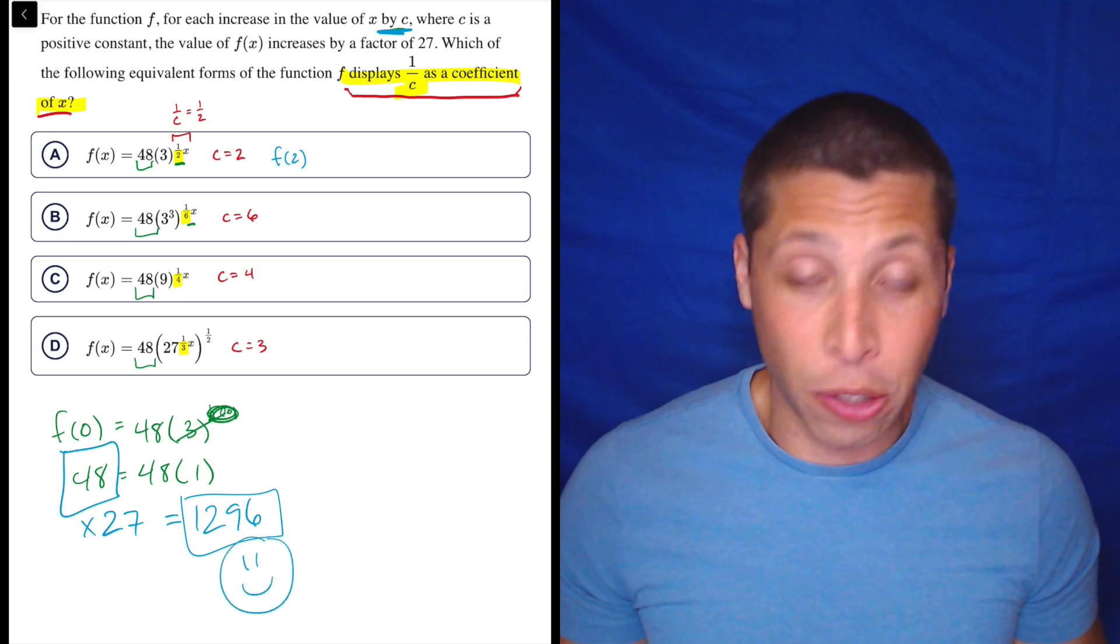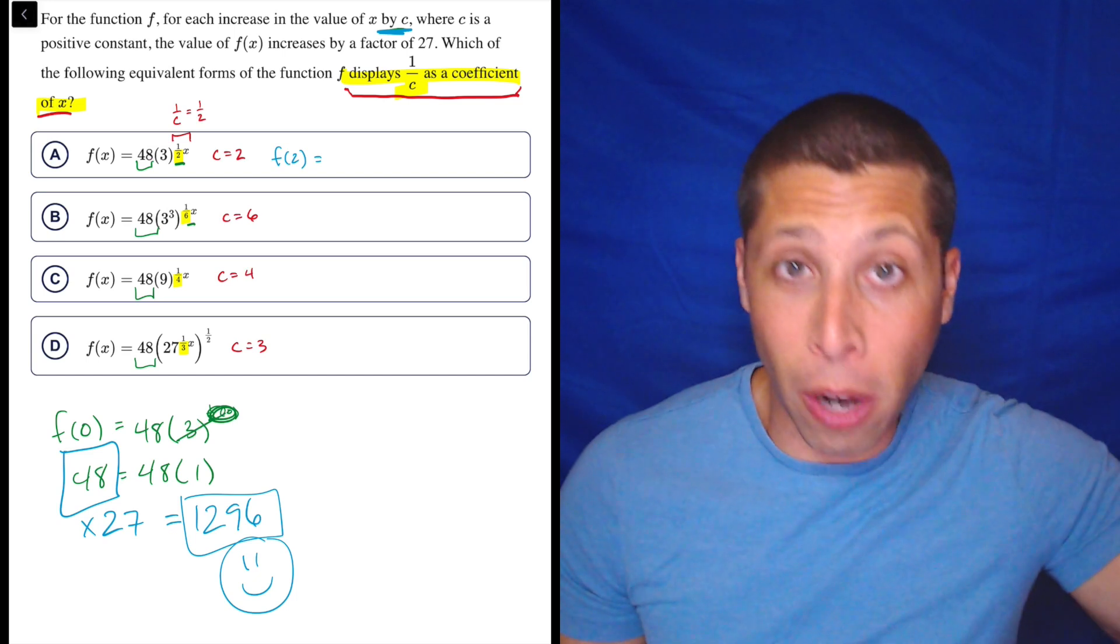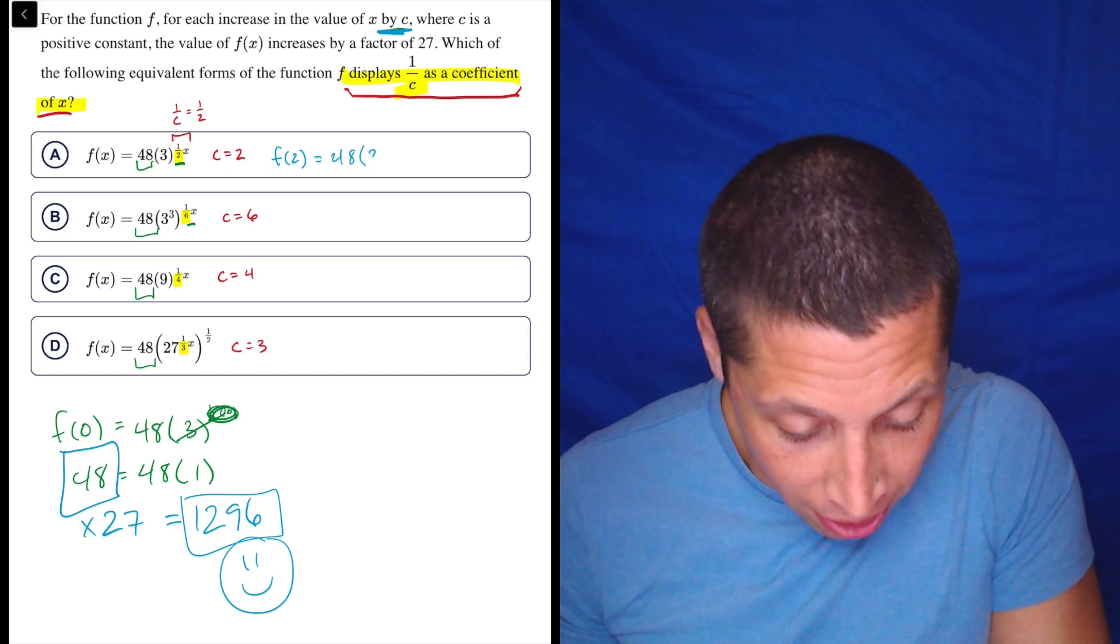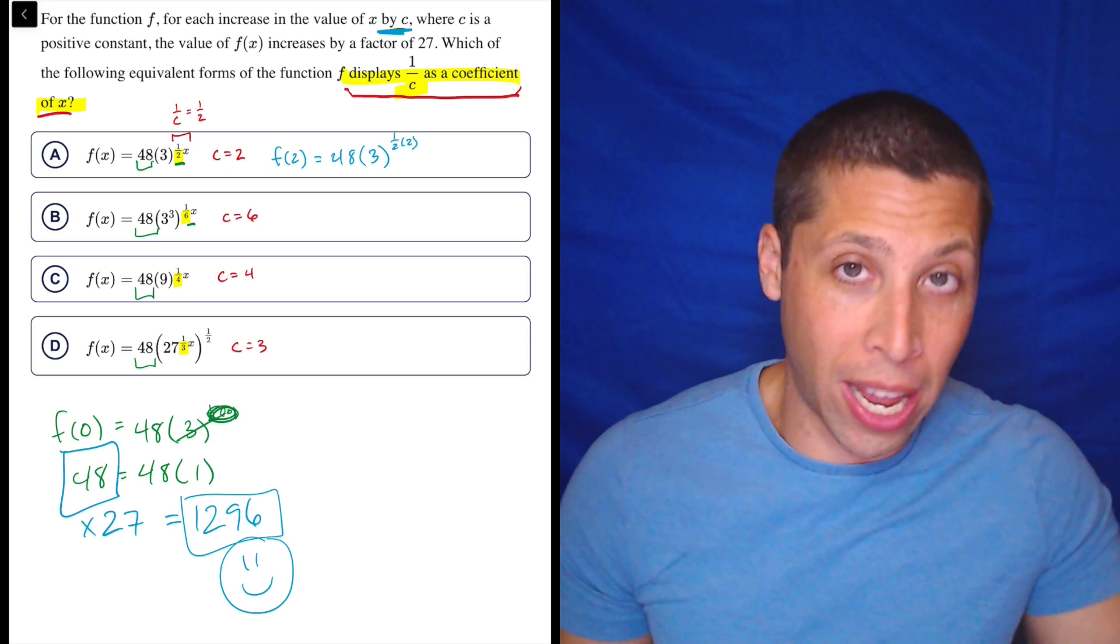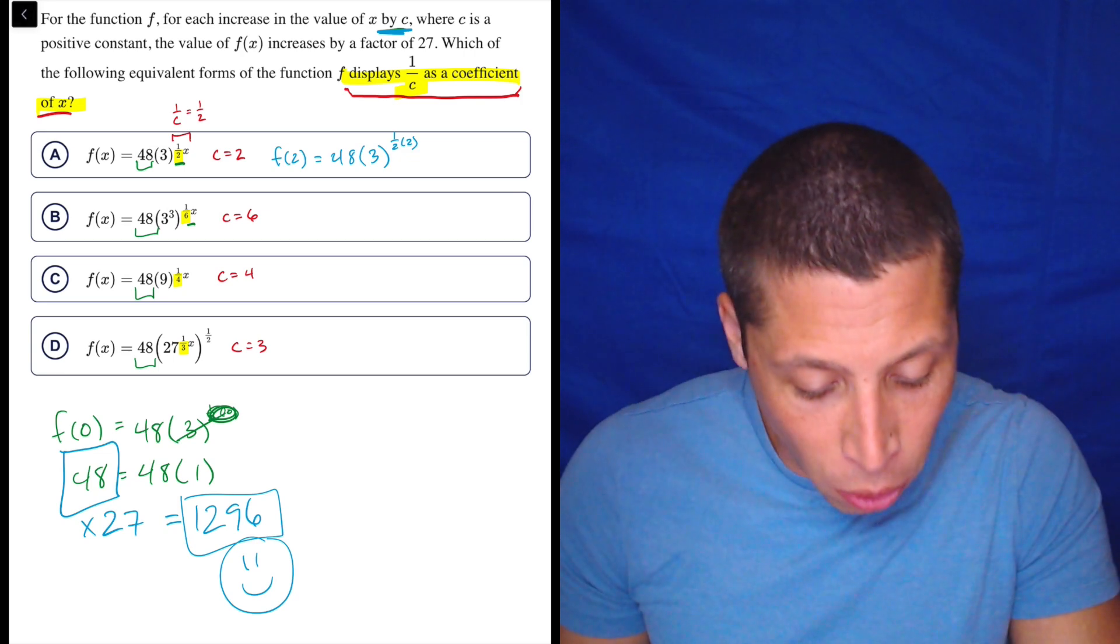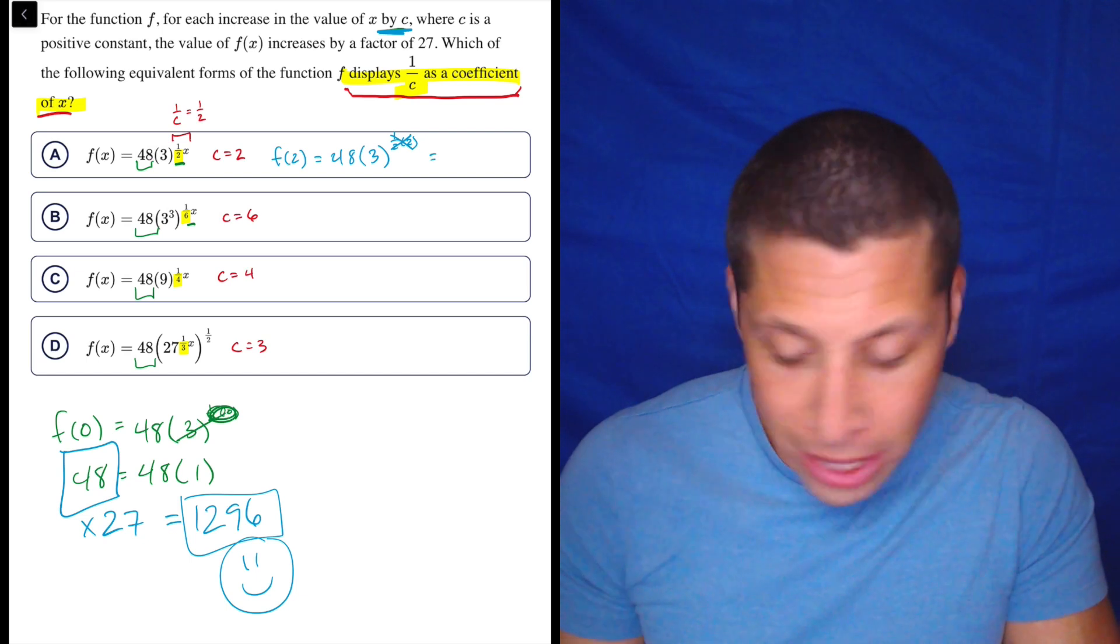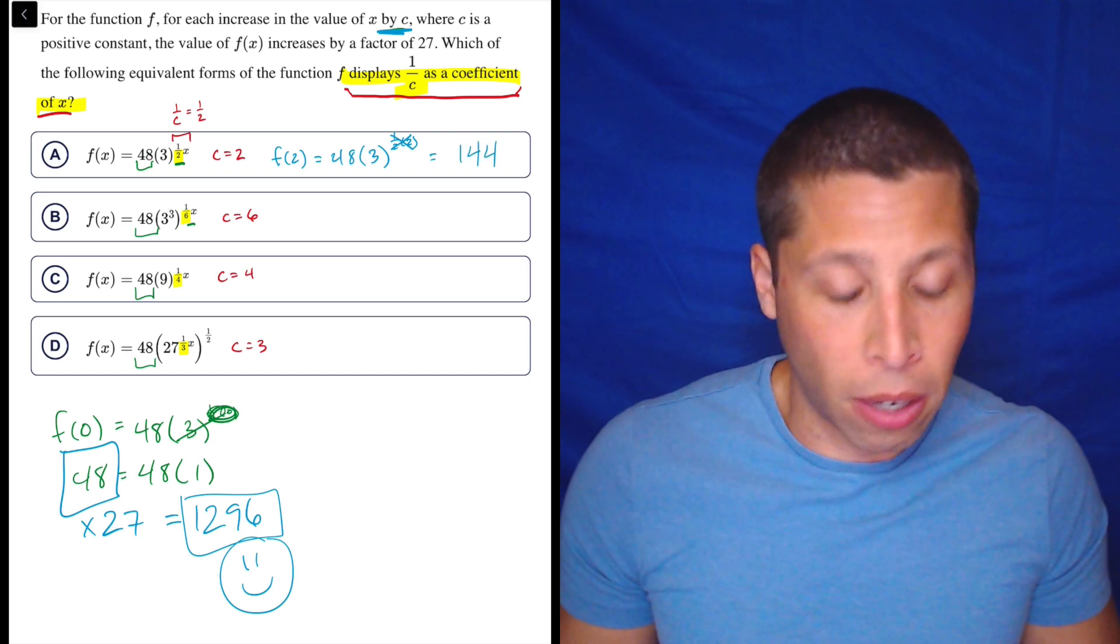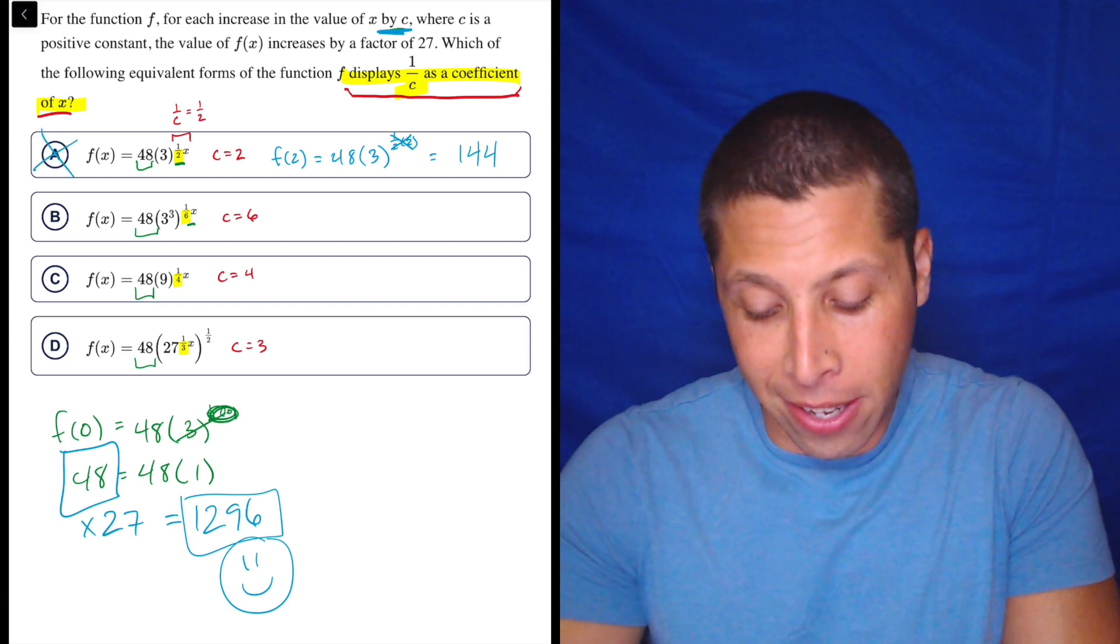So when we do f(2), because 2 is increasing 0 by the value of c, by 2, we're going to get 48 times 3 to the 1/2 of 2. Now look what happens if we do 1/2 of 2, it turns that into a 1. So this whole exponent basically is irrelevant because it's 3 to the 1st. So that's 48 times 3, which I know is not going to be 48 times 27, but it's 144. So that's not it.